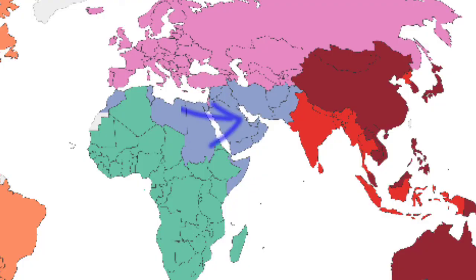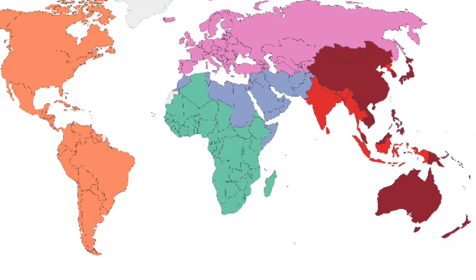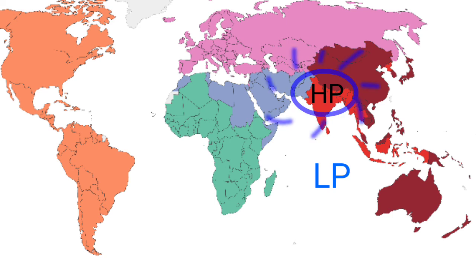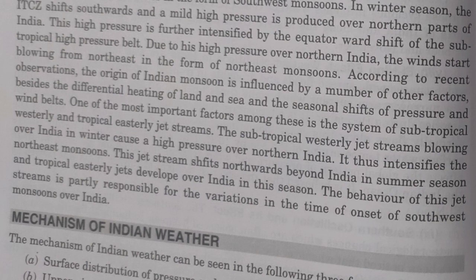In winter, it is just the opposite. The westerly jet streams, which are cold winds, blow from the western side of India. The high pressure already formed over India due to the seasonal shift of the sun and the differential heating of land and sea becomes more intensified. So what jet streams do is intensify the pressure system formed over the northern plains of India, helping in the occurrence of the seasonal reversal of wind.